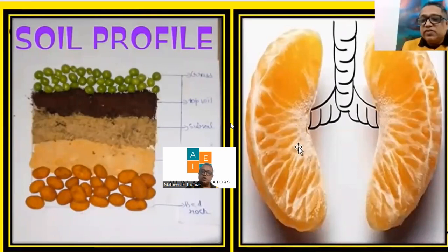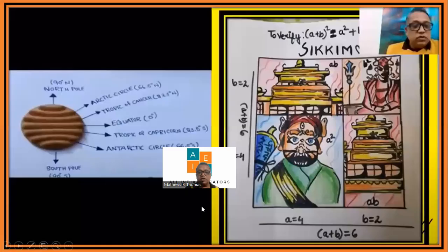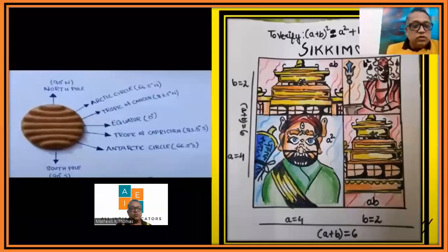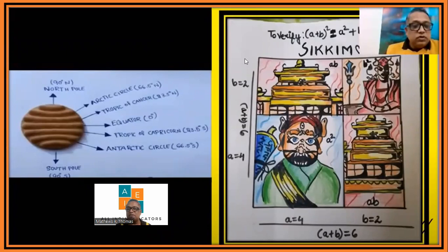There is no dearth of ideas when we start giving students projects. Here, someone has used a biscuit — which type? Good day biscuit. The child has taken that Good Day biscuit and made it into a beautiful explanation: North Pole, South Pole, Arctic Circle, Tropic of Cancer, the equator, Tropic of Capricorn, and Antarctic Circle. The biscuit doesn't remain a biscuit — it becomes a learning tool. On the right side is the derivation of the identity: a plus b whole square equals a squared plus b squared plus 2ab.